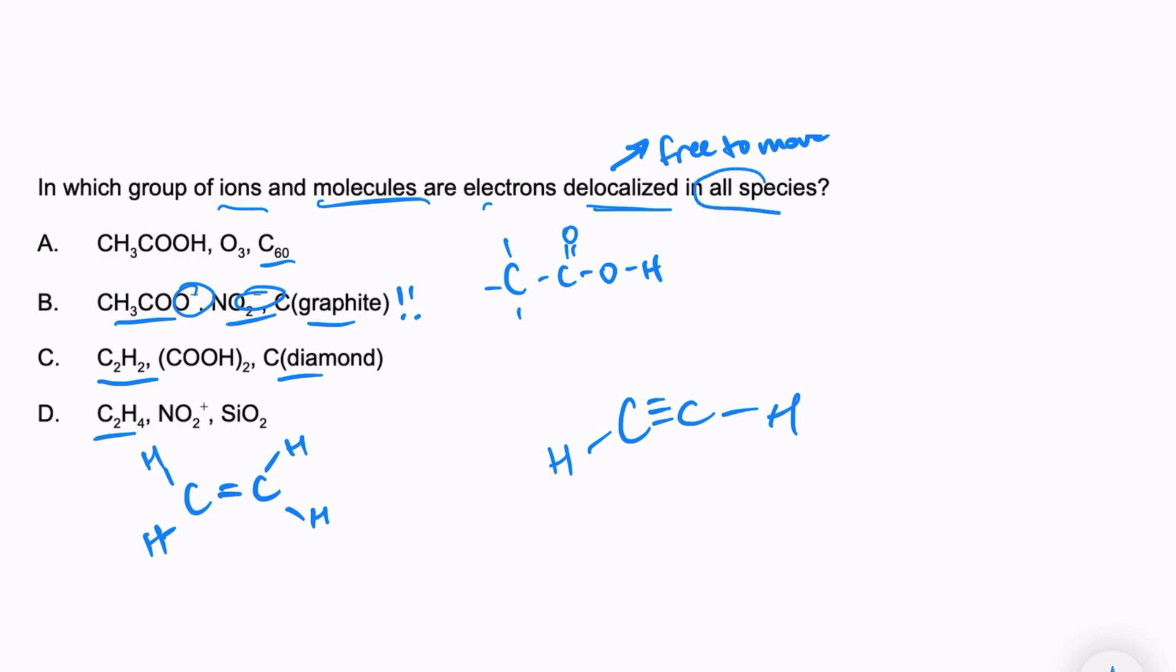C2H4 would look something like this, and again, the octet rule is being followed. There's no free-moving electrons. Remember we were looking for delocalized electrons in all species. That's why I just went through the first species of each answer. And that's all I have to do.